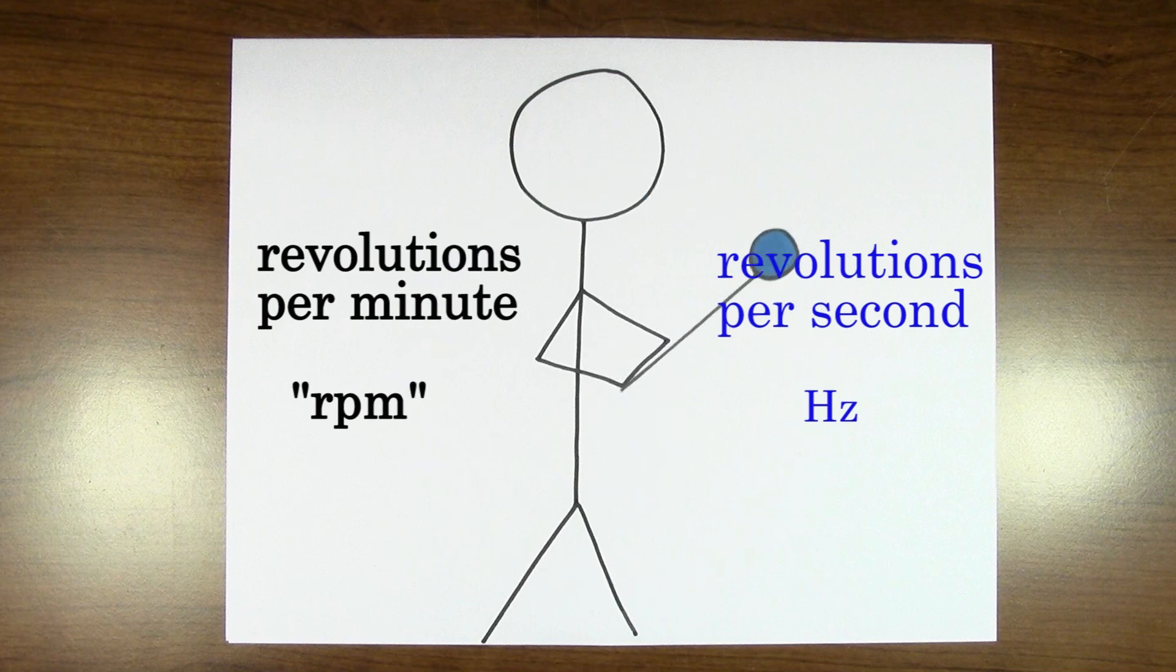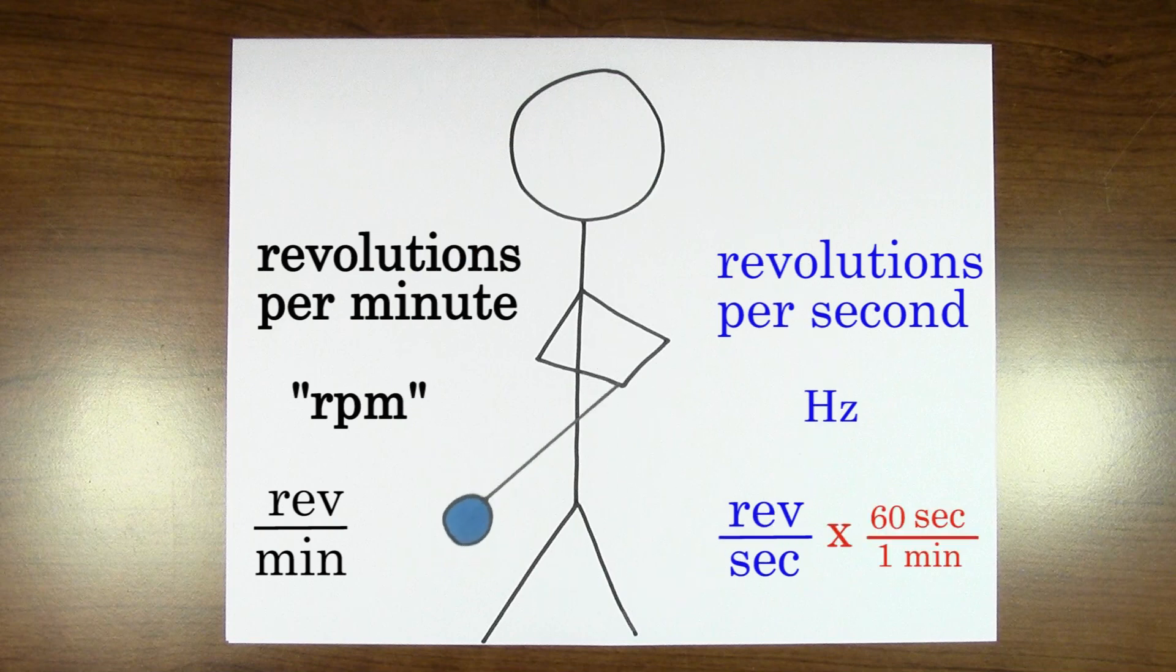Converting between the two isn't all that much trouble, because all you have to do is convert minutes into seconds. But be careful, since time here is in the denominator, you have to multiply hertz by 60 to get revolutions per minute or divide revolutions per minute by 60 to get hertz.